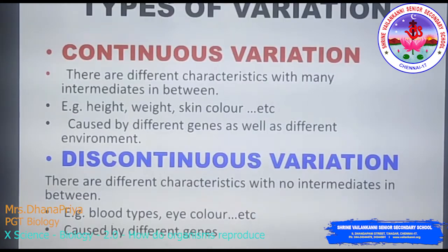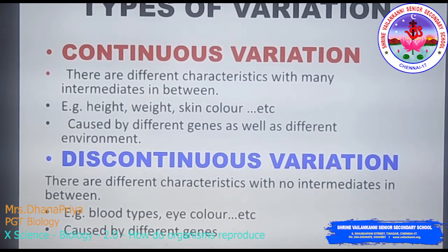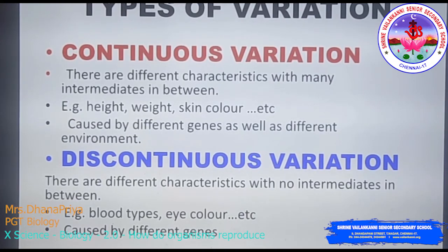The types of variation are continuous variation and discontinuous variation. Continuous variation involves characteristics with many intermediates in between — like height, weight, and skin color. Discontinuous variation involves characteristics with no intermediates — like blood type and eye color. Continuous variation is caused by different genes as well as different environments, whereas discontinuous variation is caused only by different genes.